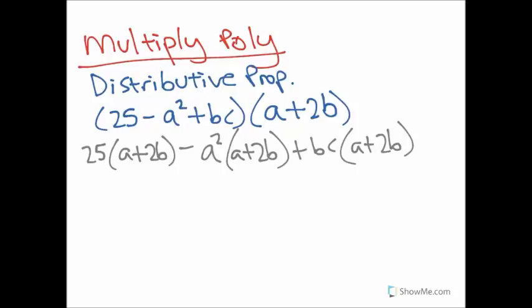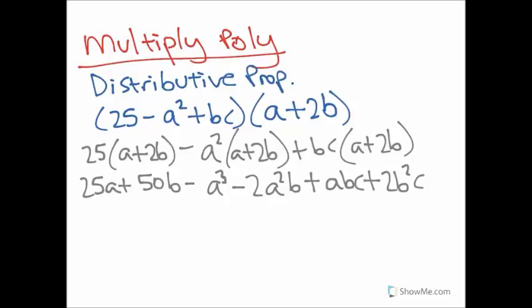Then, we can distribute that one more time. So, we end up with 25a plus 50b minus a cubed minus 2a squared b plus abc plus 2b squared times c.